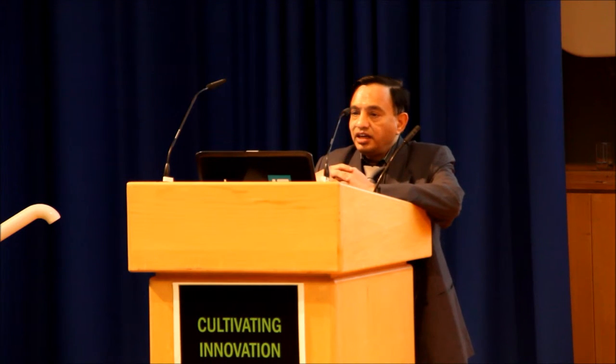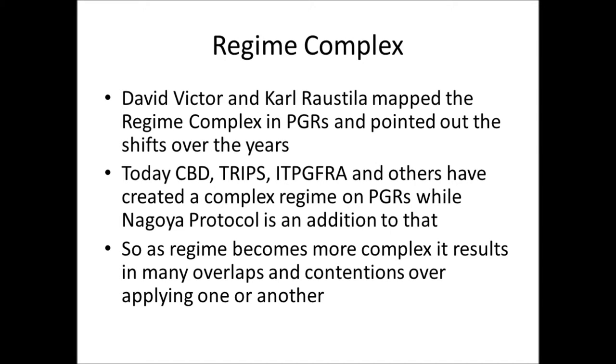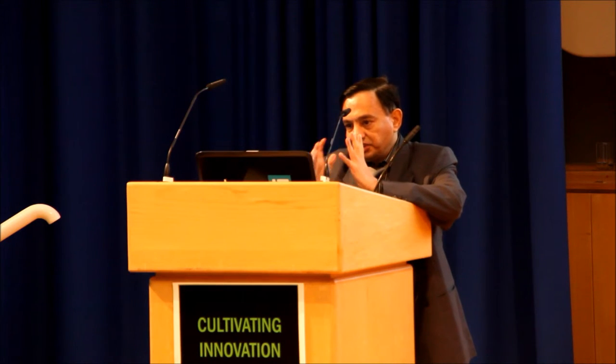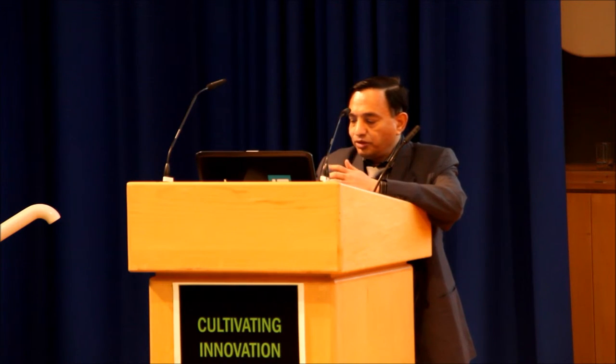In case of most plant genetic resources, they are either privately owned or under national sovereignty. Those under the CGIAR are held in common trust by FAO for all of humankind. Both the Convention on Biological Diversity and TRIPS brought a sea change in plant genetic resources management and ownership. David Victor and Carl Raustiala wrote a paper in 2004 mapping the regime complexes in plant genetic resources and identifying shifts over the years. Today, the Convention on Biological Diversity, TRIPS, ITPGFRA, and the Nagoya Protocol have created a complex regime on PGRs, resulting in many overlaps and contentions over which regime applies.